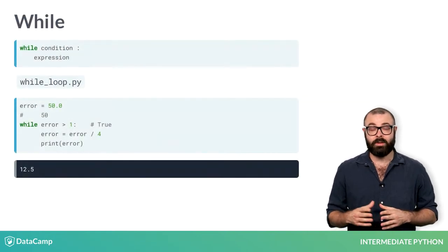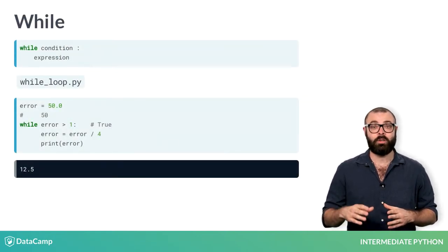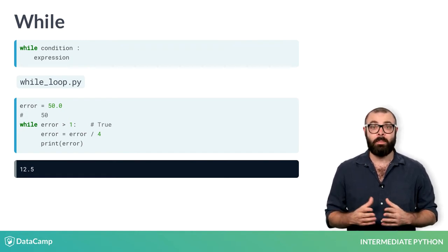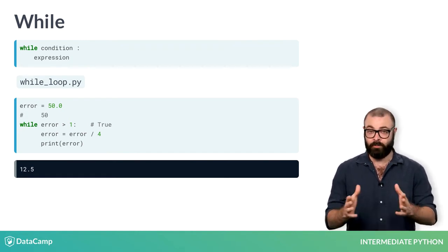On the first run, the error is 50, so the while condition is true and the corresponding code is executed. The error is divided by 4 and printed out, 12.5.